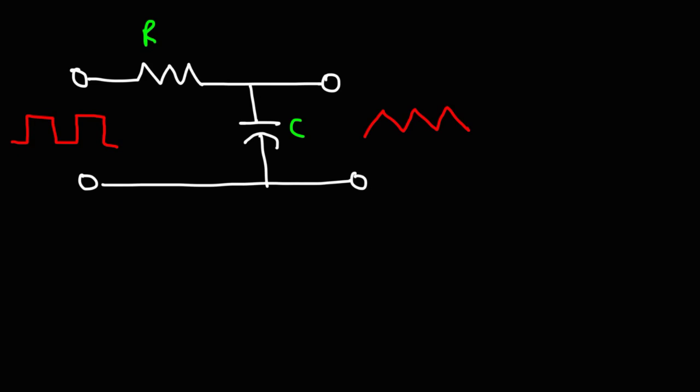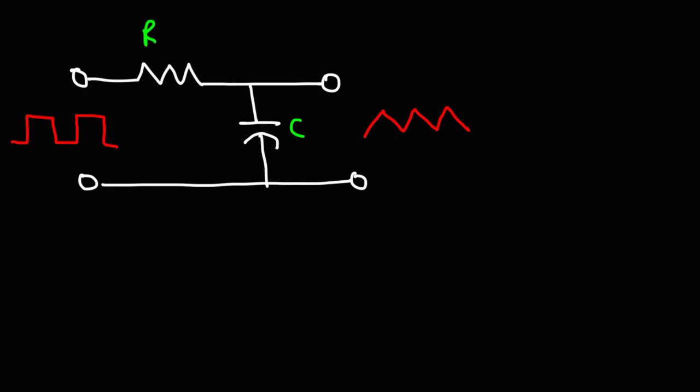In this video, we're going to talk about how to convert an incoming square wave into a triangular wave. The incoming square wave can be produced by the 555 timer circuit, and I have another video that shows you how you can generate that waveform. Now, if you connect that to this RC network, you can convert it to a triangular wave if you choose the right values for R and C.